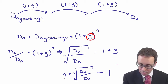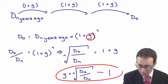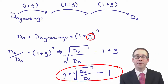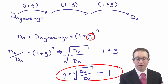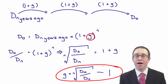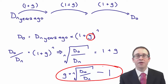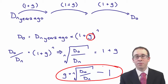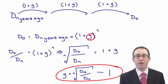That's the formula you'll need in the exam. You take the Nth root of D0 divided by Dn, subtract one — it's not a difficult formula to remember. The difficult aspect is putting the numbers into your calculator. You'll need a scientific calculator in the exam, and we'll show you in the following examples how to plug the numbers in.